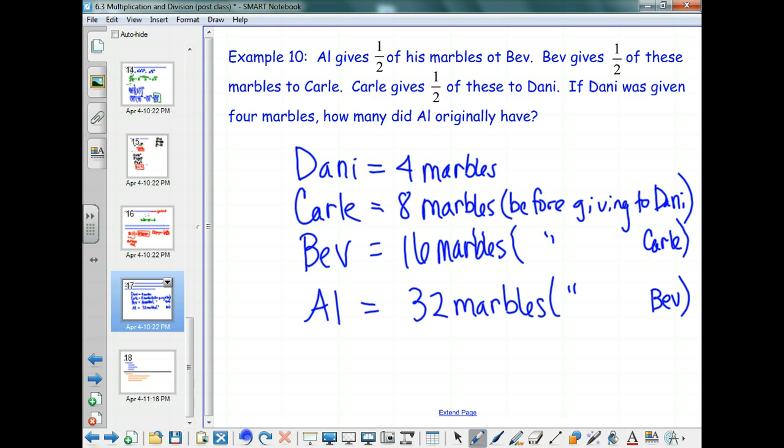So the answer is what? Yeah, so Al originally had 32 marbles. And if you'll notice, this is actually an exponential. Every time you multiply it by two, the powers of two are those exponentials we just talked about on the previous slide, right? That's what's present here. Make sure that when you're working on word problems, that it's word problems with context, that your answer has context too. You don't necessarily have to write the sentence that I just wrote out, but you do need to say 32 marbles, not just 32. Okay? All right.